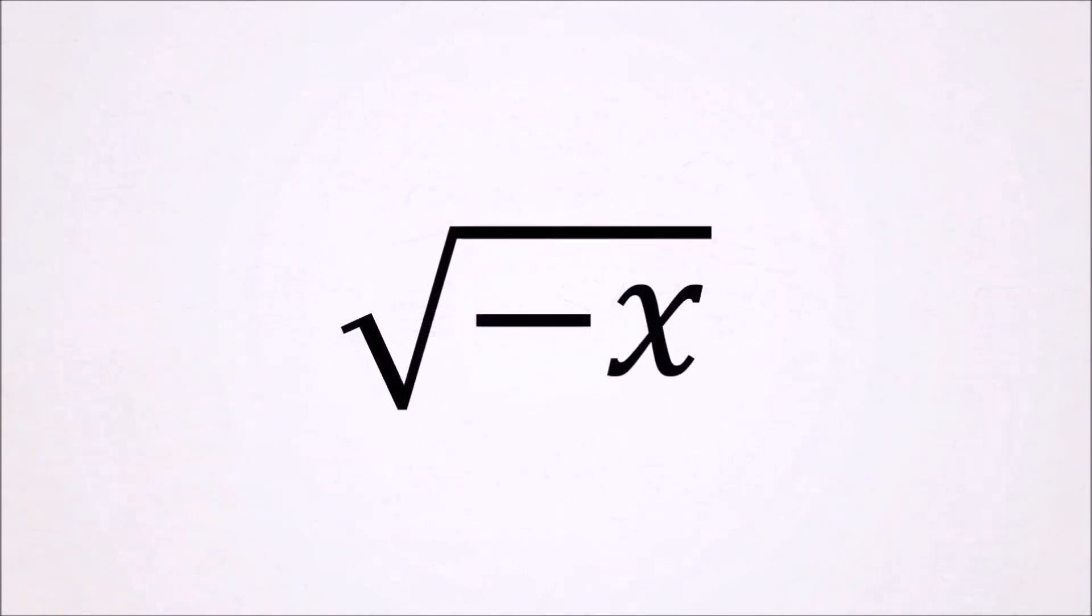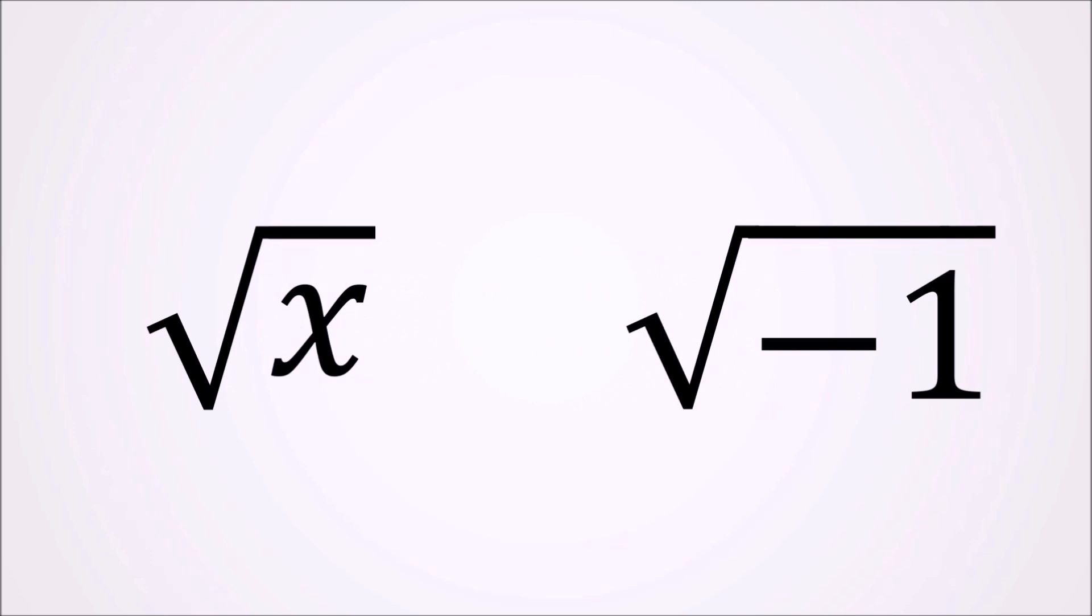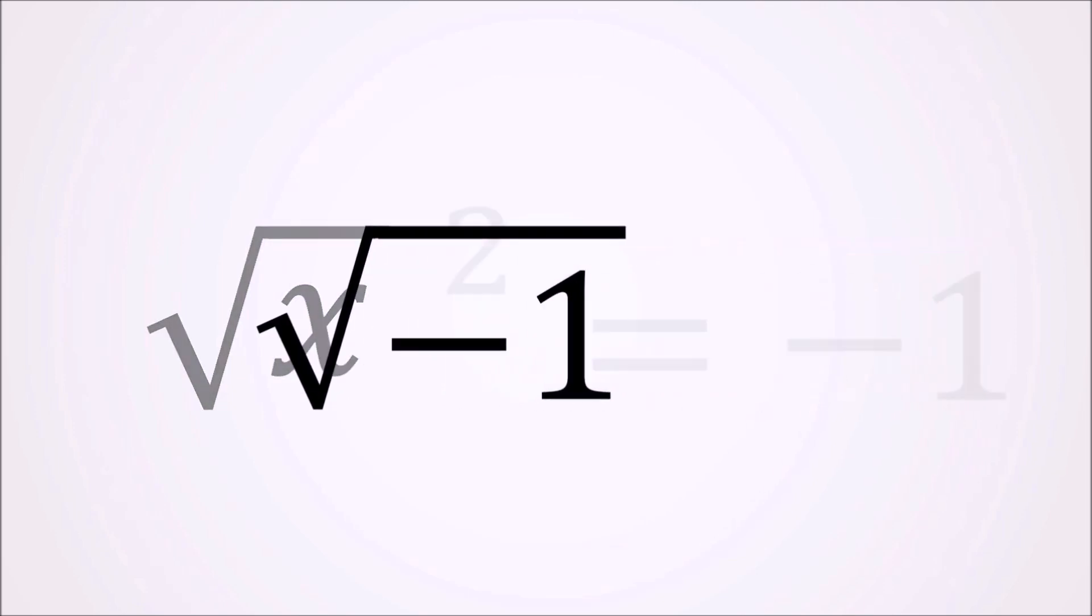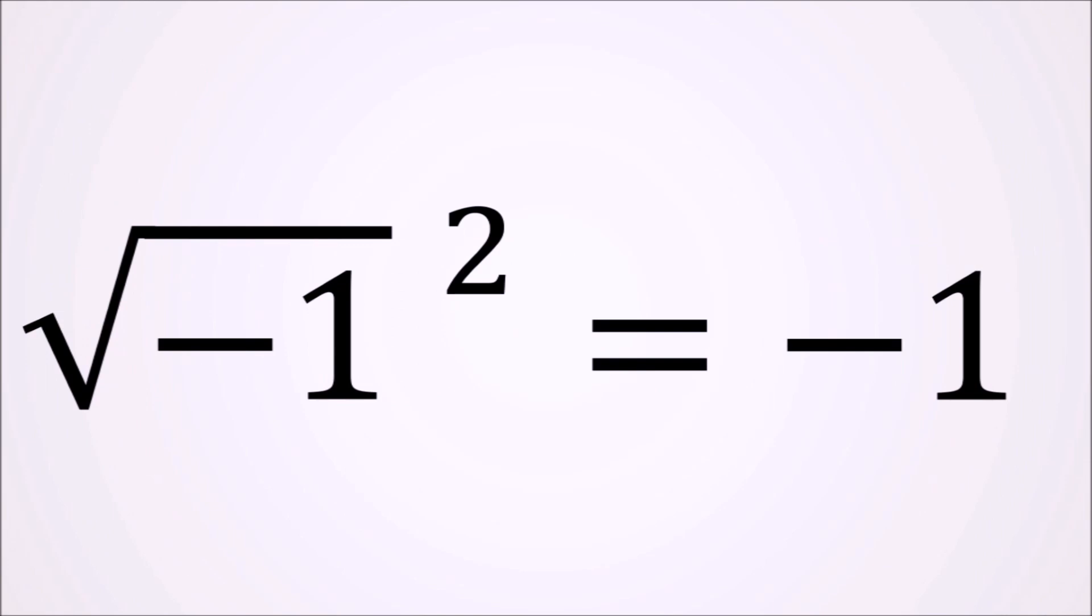He decomposed the negative square roots into a positive square root and a square root of minus 1. And despite the fact that this square root of minus 1 doesn't have any value, he continued calculating with it, using the assumption that the square root squared is minus 1. And that was brilliant.